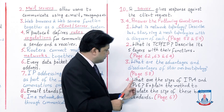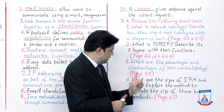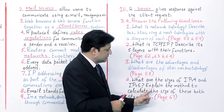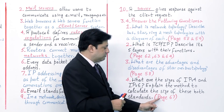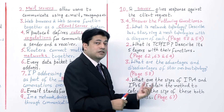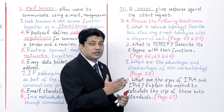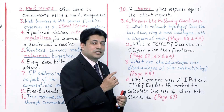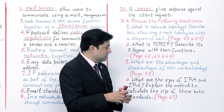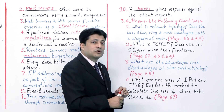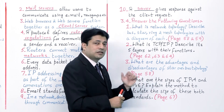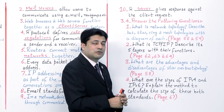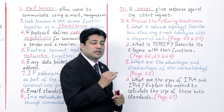Question 4: What are the sizes of IP version 4 and IP version 6? Explain the method to calculate the size of both standards. Page 67 has the complete answer. From the lecture: IPv4 is 32 bits and IPv6 is 128 bits. The method for calculating the sizes was also explained in the lecture.